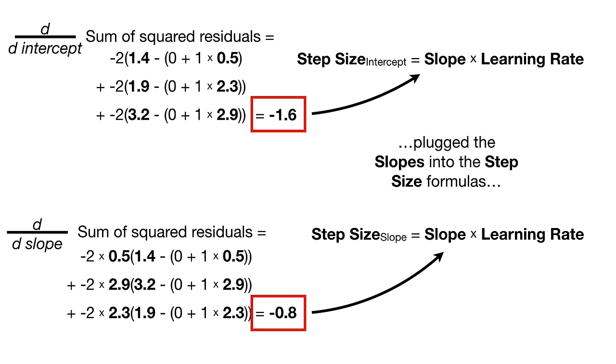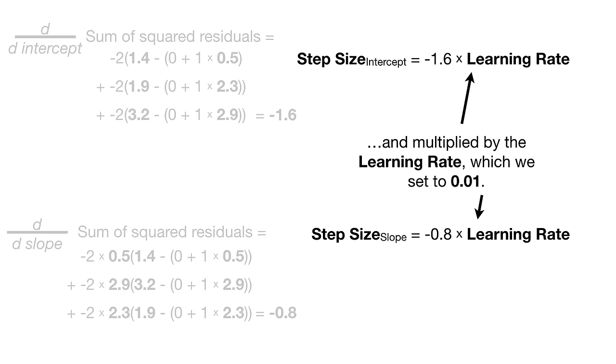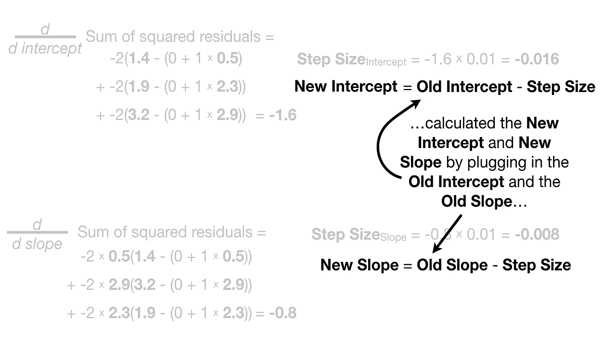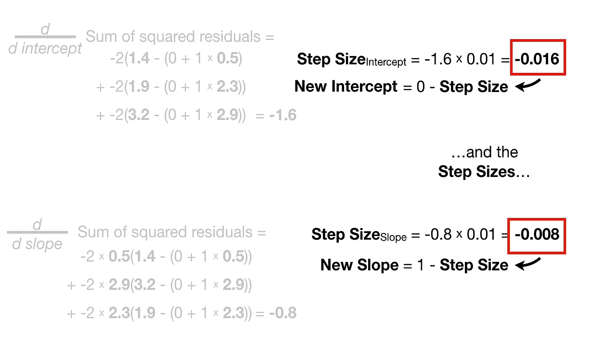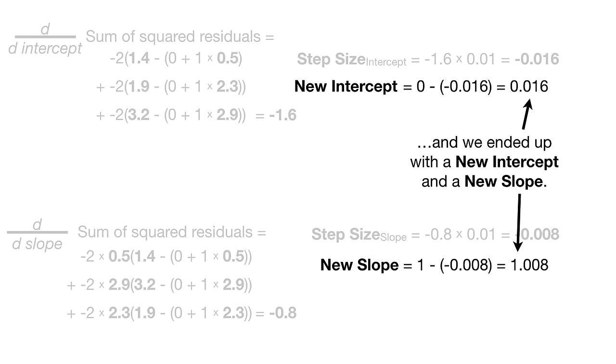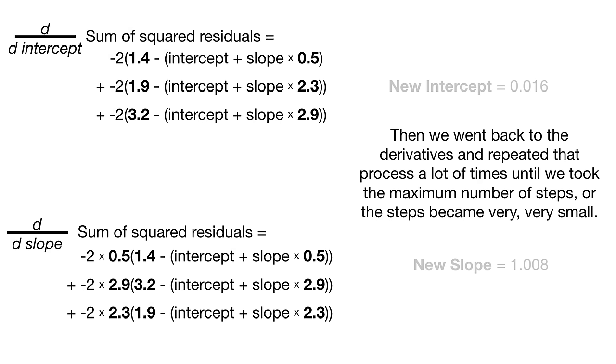Then we took the derivative of the sum of the squared residuals with respect to the intercept and with respect to the slope. Then we plugged in the values from the observed data into the derivative with respect to the intercept, and then we did the same thing for the derivative with respect to the slope.